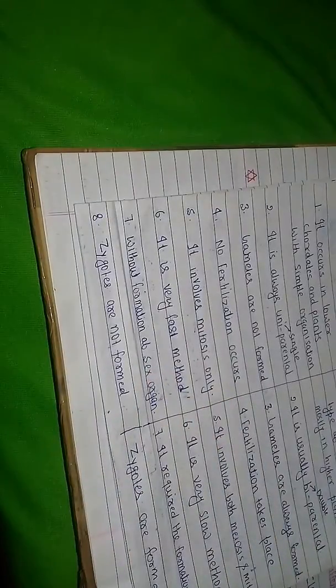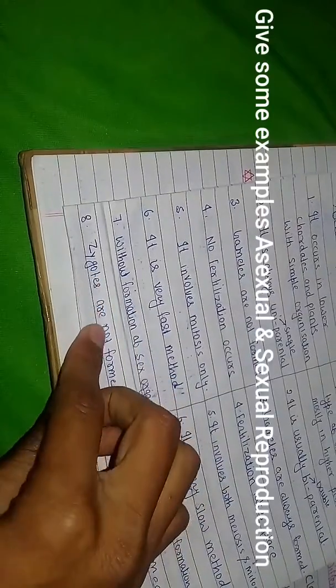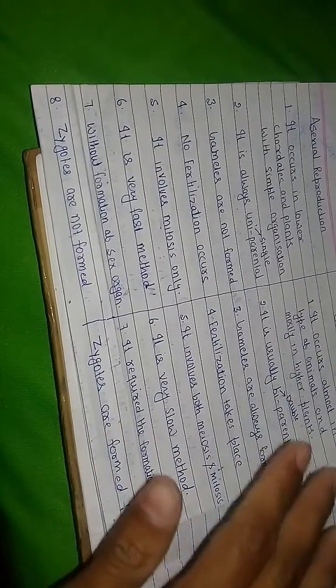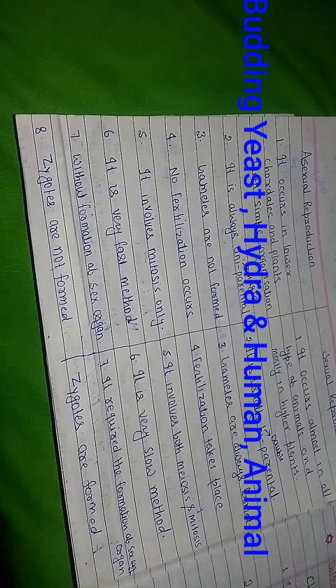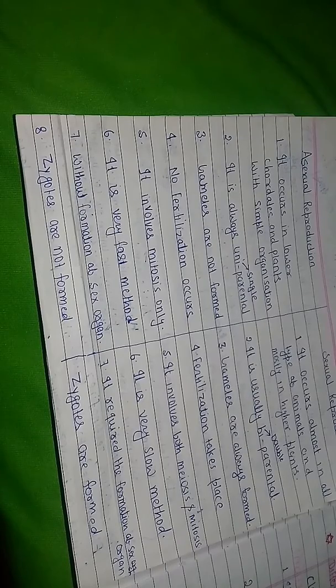And finally, the point is: in asexual reproduction, zygotes are not formed, but in sexual reproduction, zygotes are formed. I hope this video was very helpful and thanks for watching this video. You will meet in the next video. Thank you and bye bye.